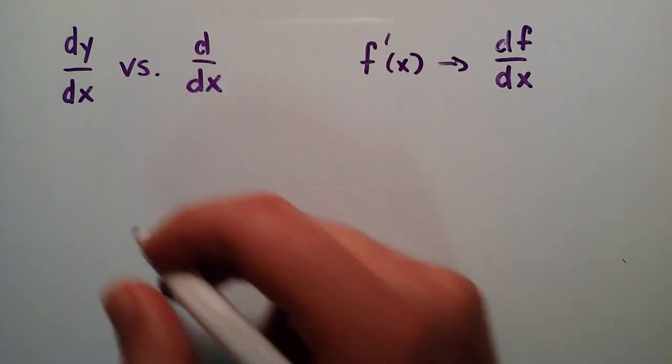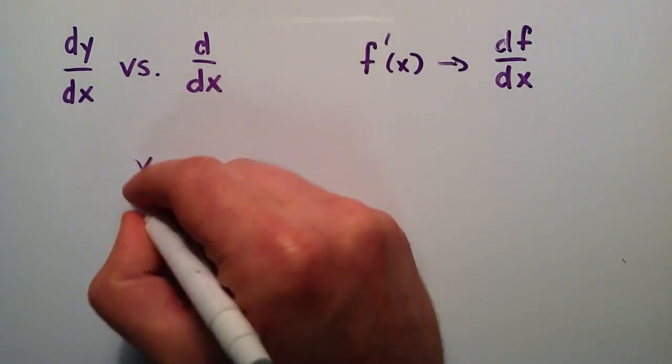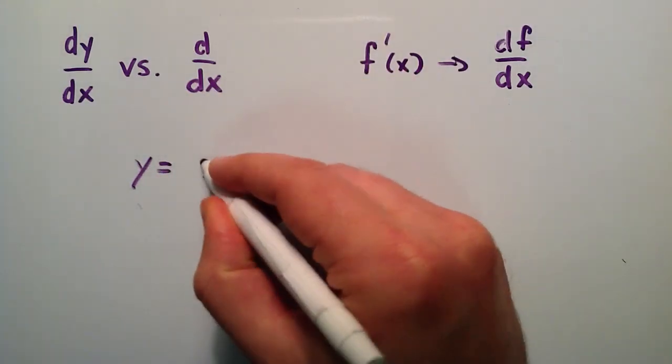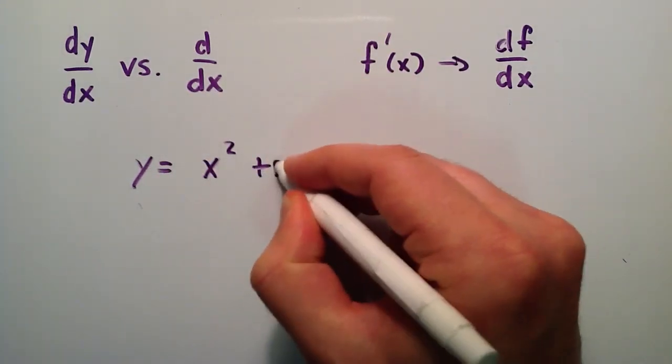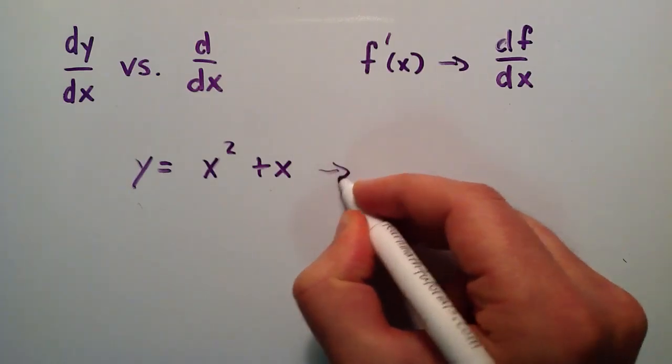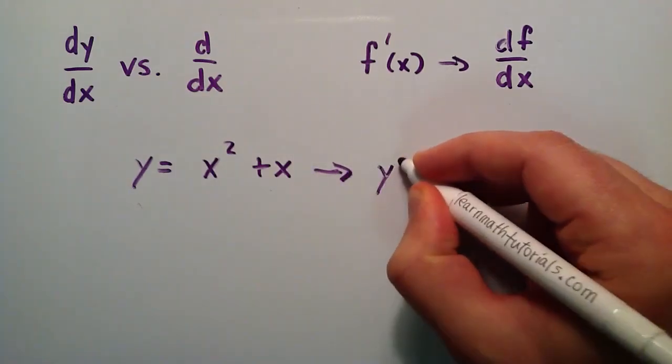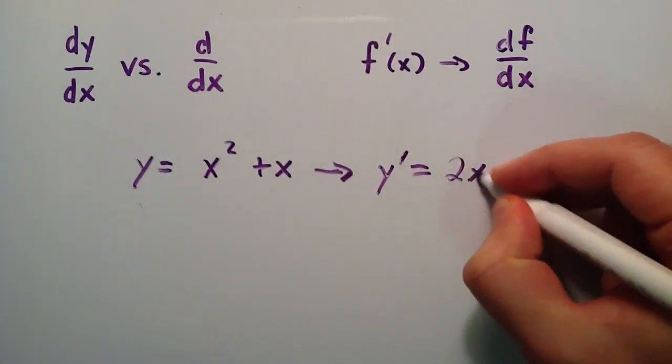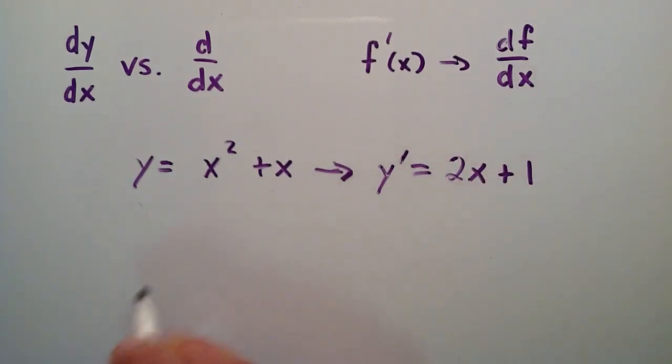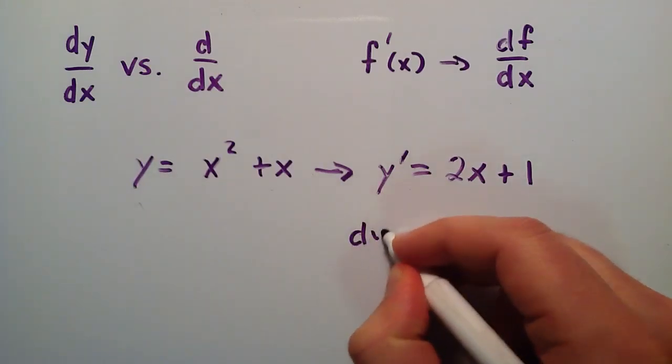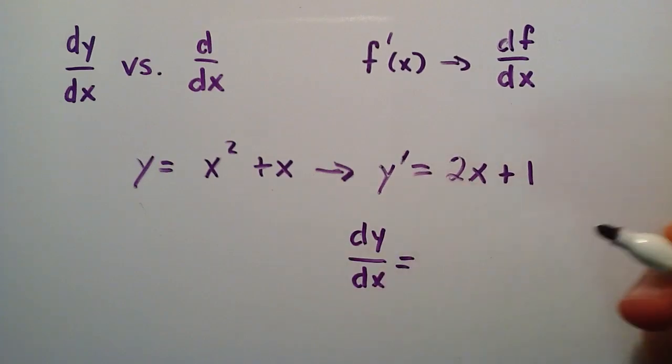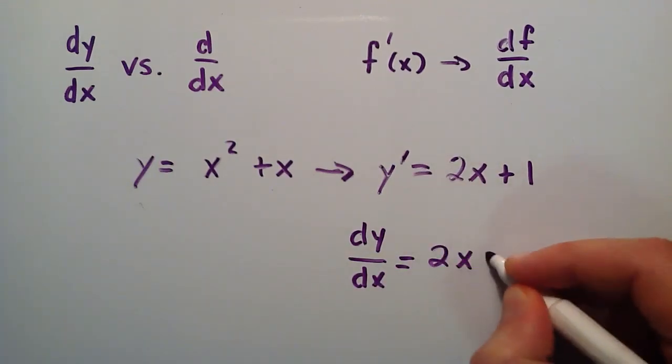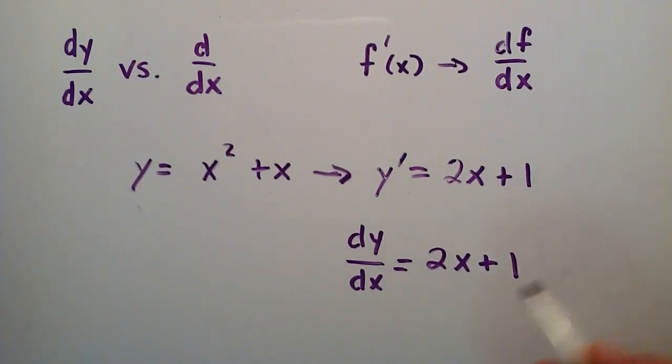So basically, if we had y is equal to x squared plus x, then the derivative, we'll just call it y prime for now using Newton's notation, the derivative is equal to 2x plus 1. And so we could rewrite this in Leibniz notation by just simply writing dy over dx is equal to 2x plus 1. We're basically just specifically saying what function we just took the derivative of.